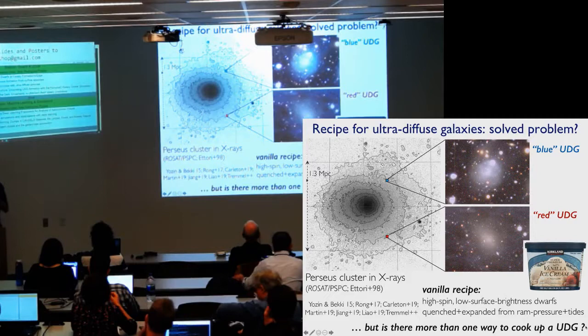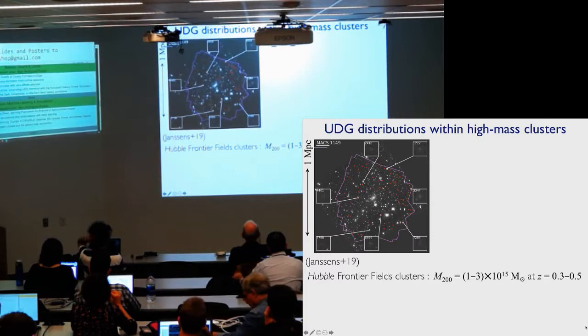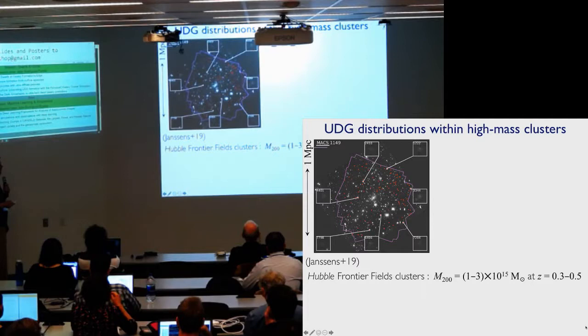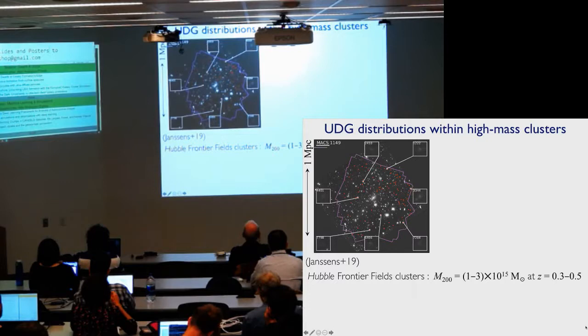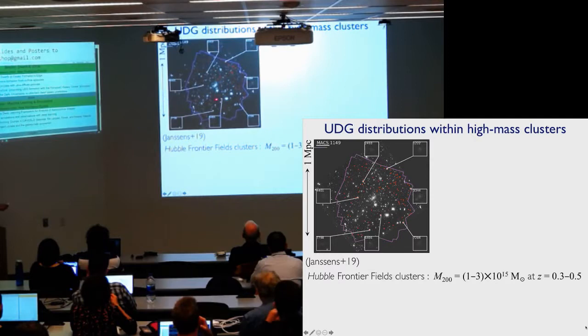This is one of the Hubble frontier fields. These are ultra-massive clusters at intermediate redshift. This is work by Steve Danson at Toronto. We've published a paper a couple years ago on the first one of these. We now have six of them. So what you can see, these red dots, if you can see them, are UDGs in this cluster. This is a one megaparsec scale. First thing you might see is that they're missing around the center, as you might expect if these are fragile, relatively fragile objects compared to a BCG and are disrupted.